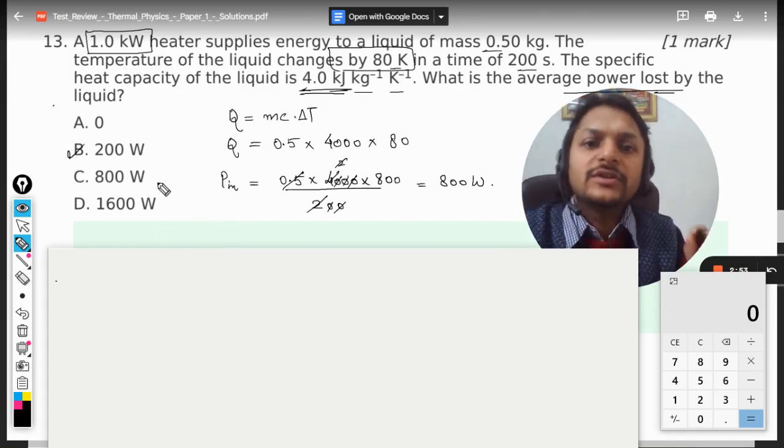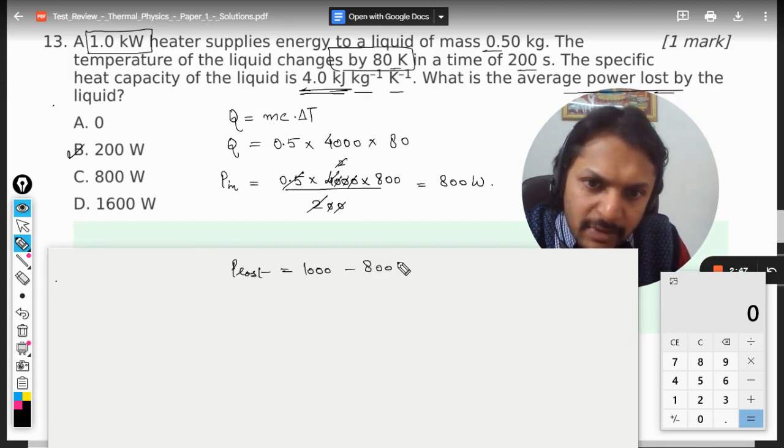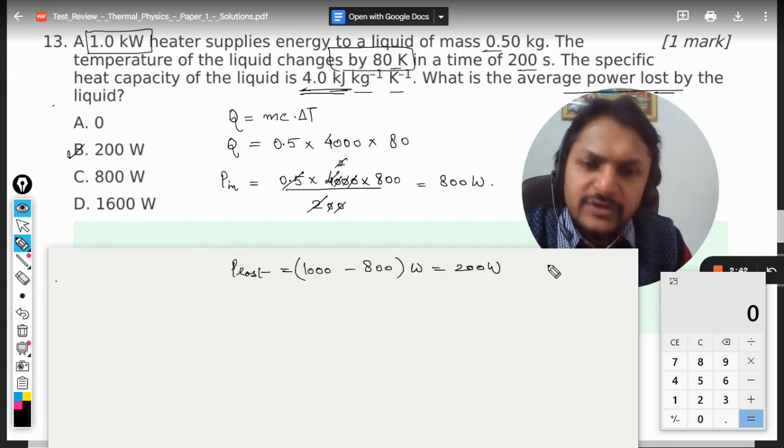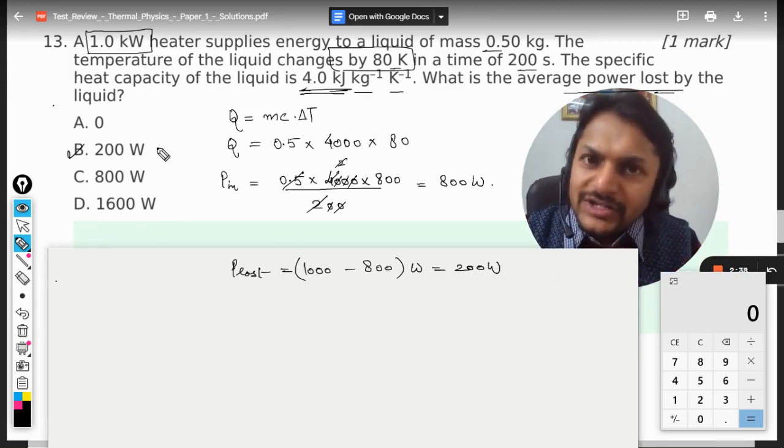This is how we do it. You can say power lost is 1000 minus 800 watt which becomes 200 watt. So this is how we do it.